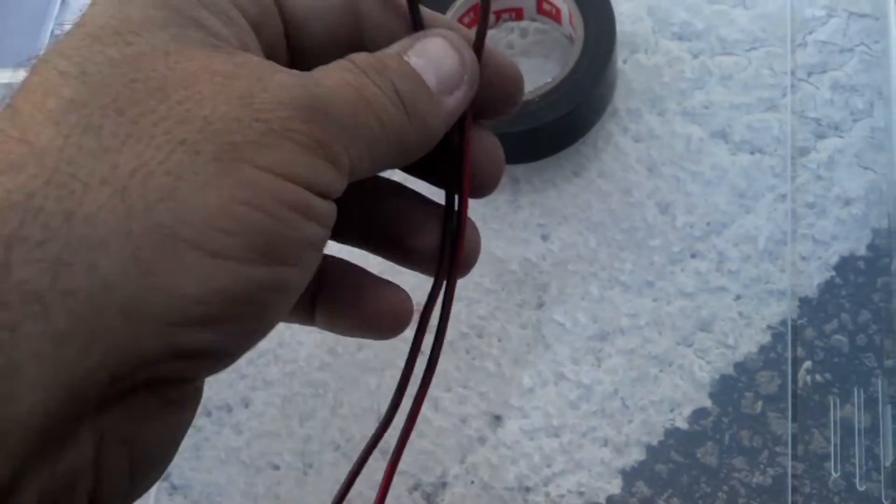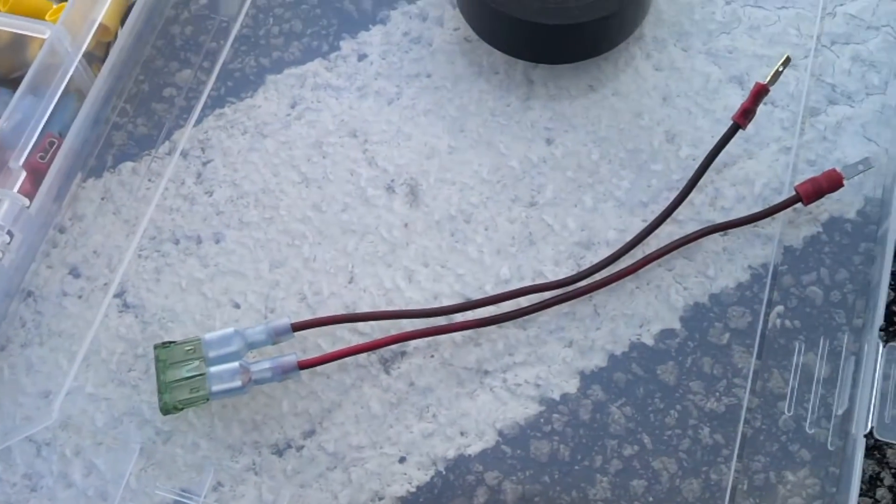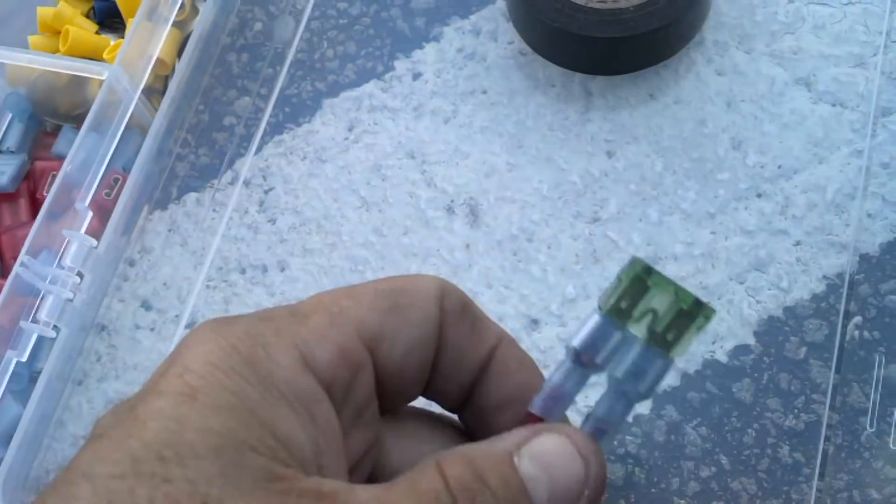But this is going to be up in the dash so this will all be taken care of. This is going to replace part of the control module but that's an improvised blade fuse.